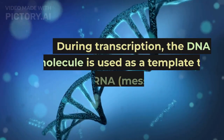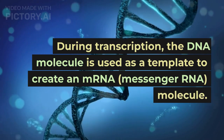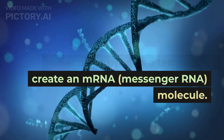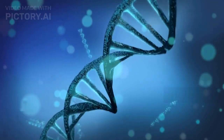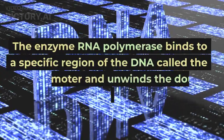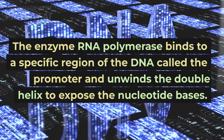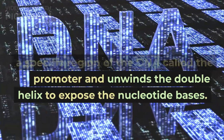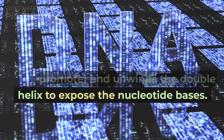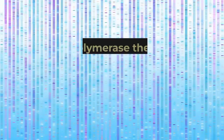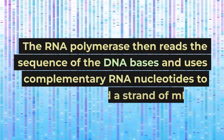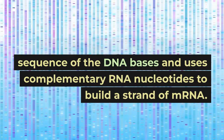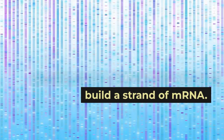During transcription, the DNA molecule is used as a template to create an mRNA molecule. The enzyme RNA polymerase binds to a specific region of the DNA called the promoter and unwinds the double helix to expose the nucleotide bases. The RNA polymerase then reads the sequence of the DNA bases and uses complementary RNA nucleotides to build a strand of mRNA.